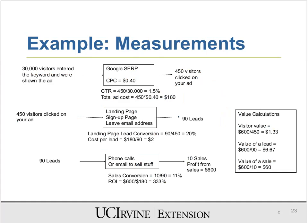Let's look into a ROI example with a fictitious company. Assume 30,000 people entered the keyword when the ad was shown, and you bid 40 cents per click. Out of those, 450 people clicked on your ad. Your CTR is 450 divided by 30,000, which equals 1.5% — a pretty good number. Your ad cost would be 40 cents multiplied by 450, which equals $180. So you'll get a bill from Google for $180. Google brought 450 people out of 30,000 to your doorstep.